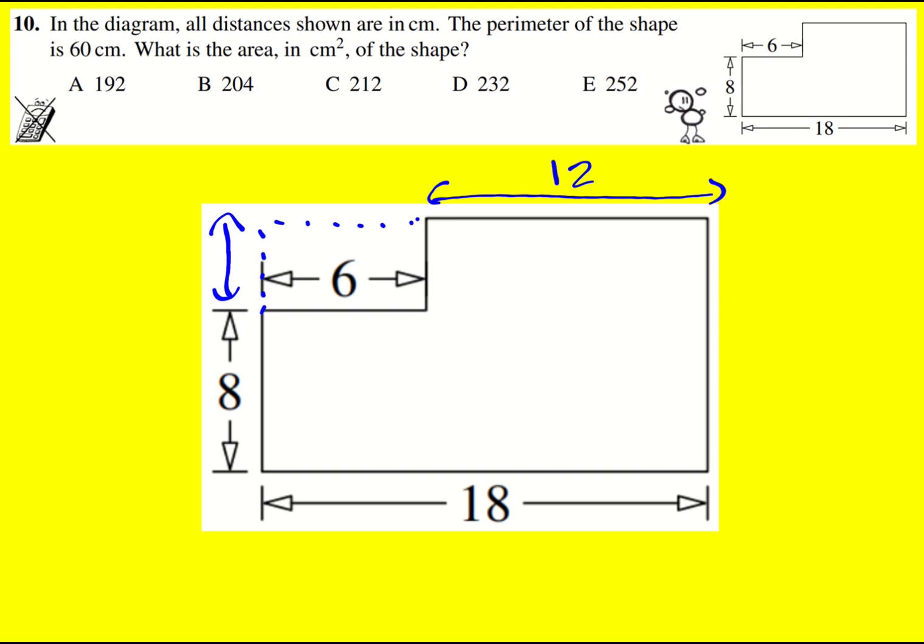And now we can use the perimeter of that. So we've got 18 times 2 is 36, and then I can do 60 minus 36 is 24, and that's going to be the right hand side and the left hand side. 24 divided by 2 will just give me one of them, 12. So this is 12, and that length I was talking about, the whole thing is 12, so this is going to be 4.